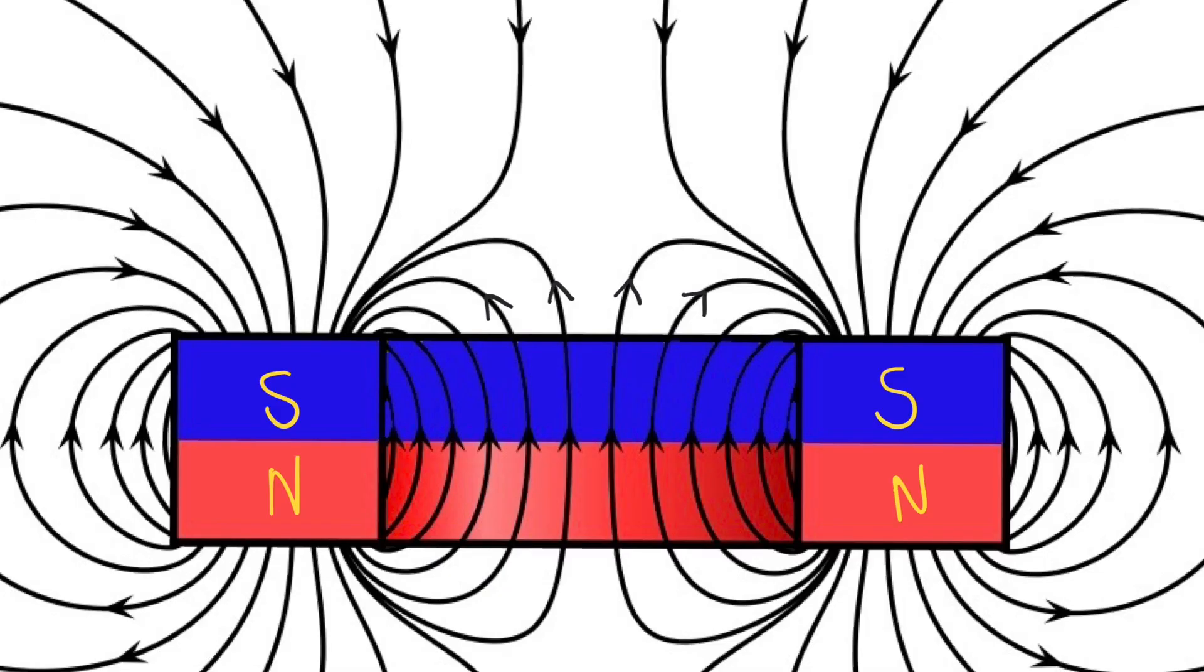This magnetic field line diagram for a ring magnet, kindly shared by Geek3 on Wikipedia, is helpful to understand what's going on.